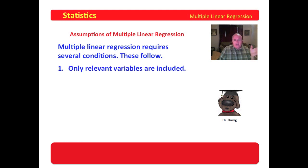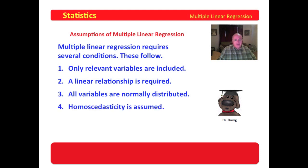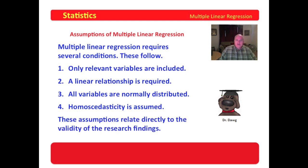Multiple linear regression requires several conditions. The first is that only relevant variables are included, the next is that a linear relationship is required, all variables must be normally distributed, and homoscedasticity is assumed. It's an awesome word. Most of us prefer homogeneity of variance. These assumptions relate directly to the validity of the research findings.